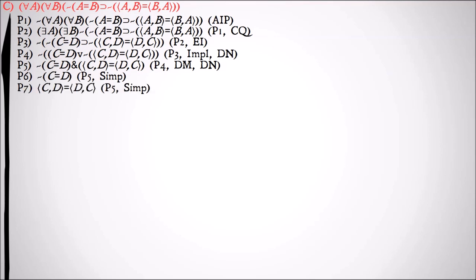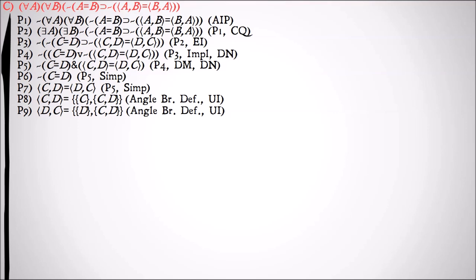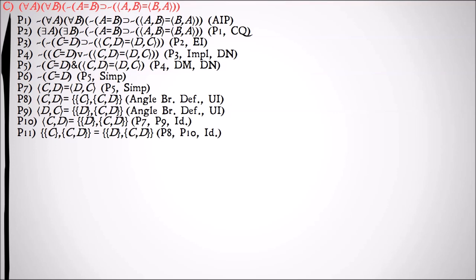And then we'll use DeMorgan's Law to distribute that double negation across our disjunction, turning it into a conjunction, and double negation to get rid of those two negations on the second half. Then we'll simplify this down to: it's not the case that C equals D, and the ordered pair CD equals the ordered pair DC. Because we're in an indirect proof, what we're now going to try to do is take this statement and show that it means that C does in fact equal D — that the only way you can have an ordered pair equal to another pair with its values switched is if those two values are the same. Once we show that, that's the opposite of premise 6 and we can get out of our indirect proof. So, in order to do this, we're going to use our angle bracket definition to show our definition for ordered pairs, and we'll do it for both CD and DC.